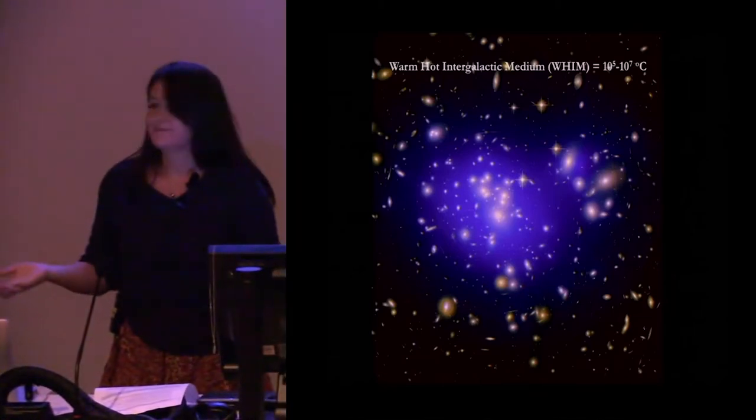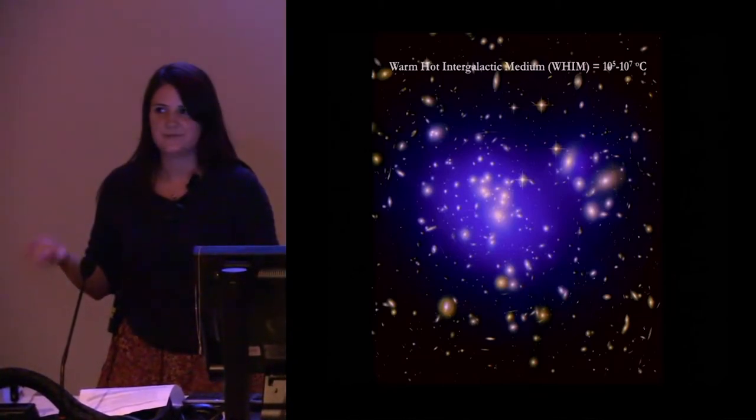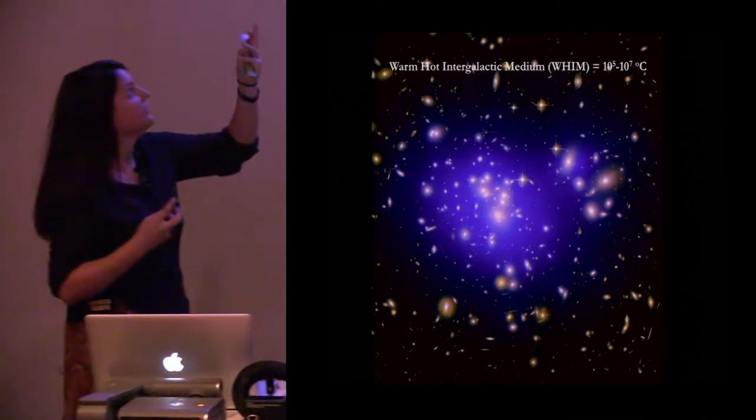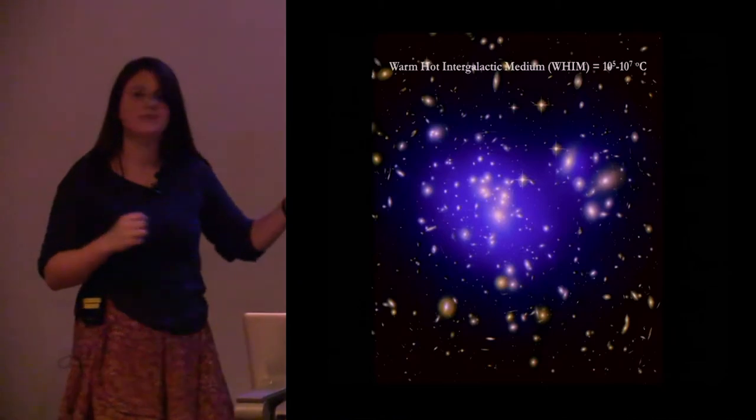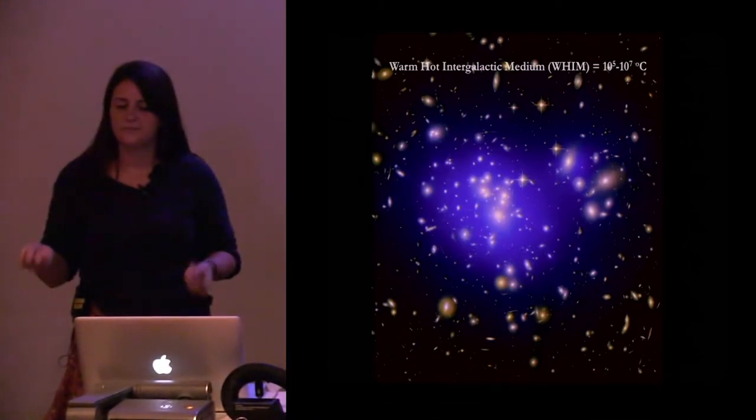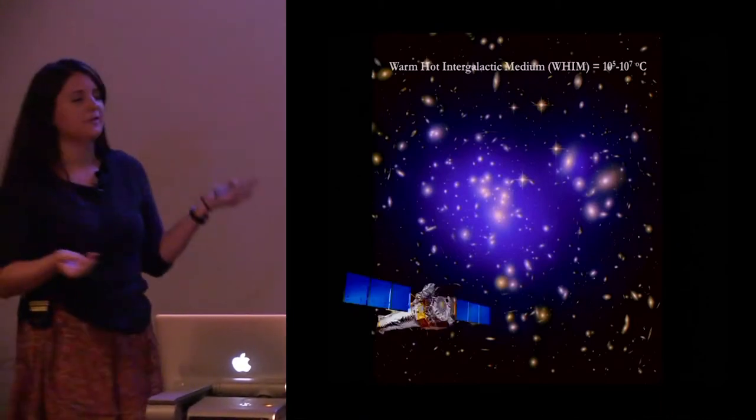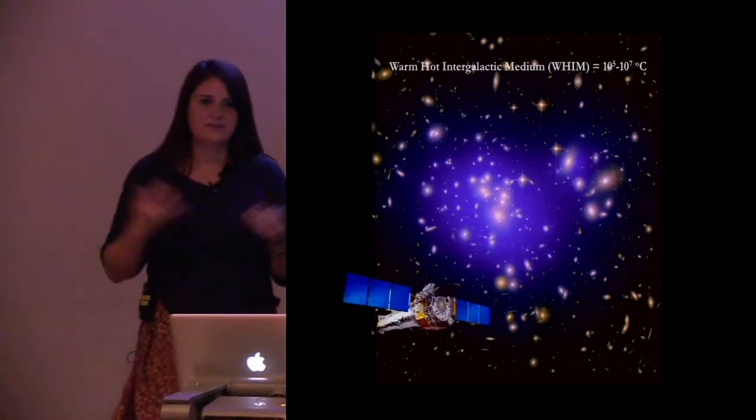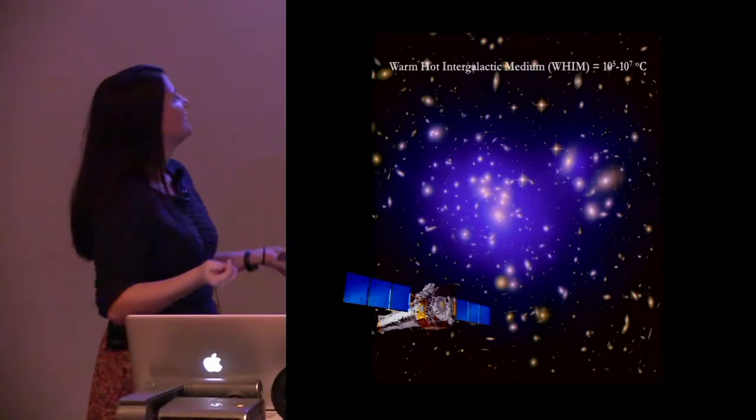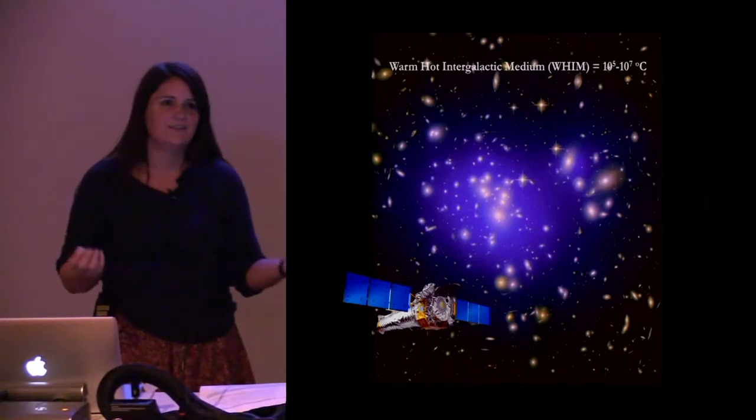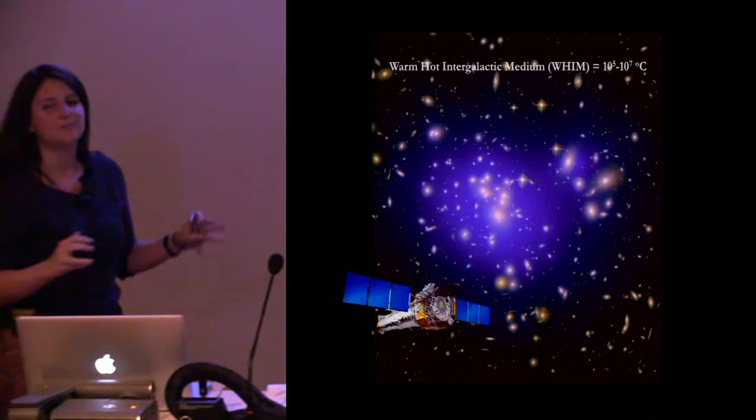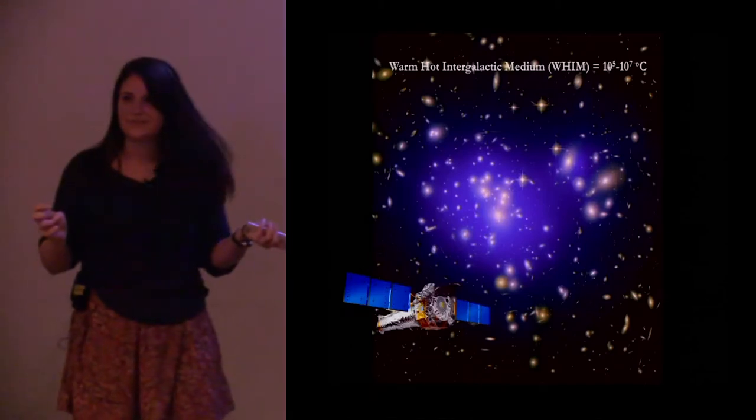Okay, so if we think that this mass is locked up in this WHIM gas, and also it's very hot, so it's 10 to the 5 to 10 to the 7 degrees which is very hot, this would emit in the X-ray regime. So why don't we just aim our X-ray telescopes at a filament of galaxies and detect it, problem solved, I don't need a summer project. Unfortunately it's not that easy, this gas is very very sparse and under dense so there's very little of it and unfortunately it's actually below the detection thresholds of our current generation of X-ray telescopes.